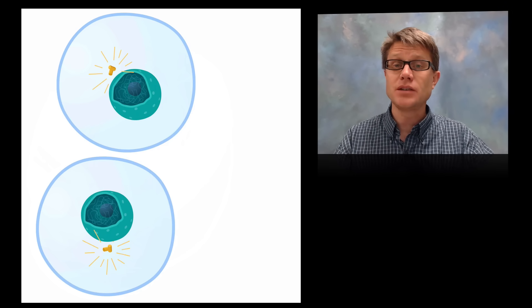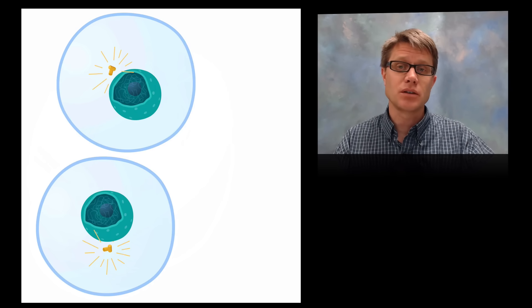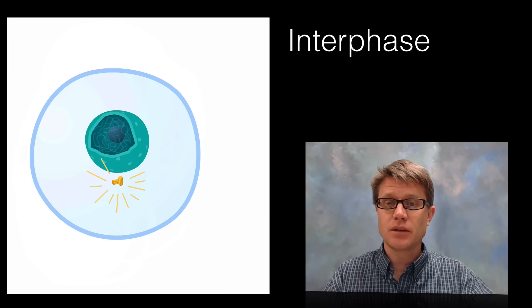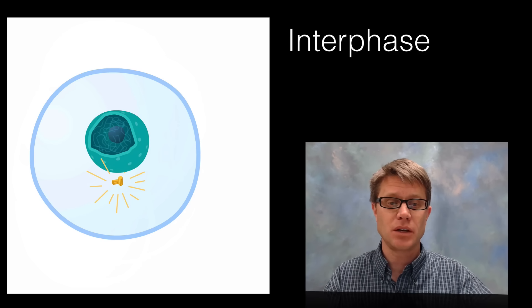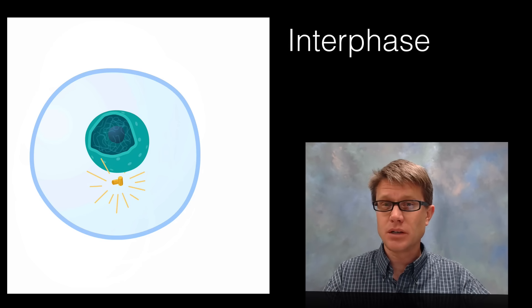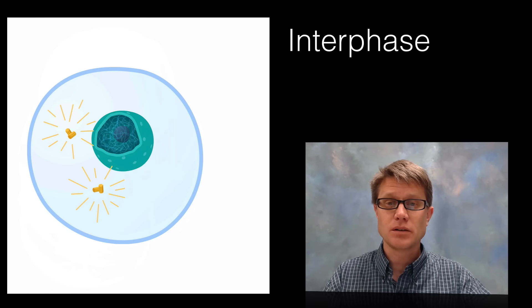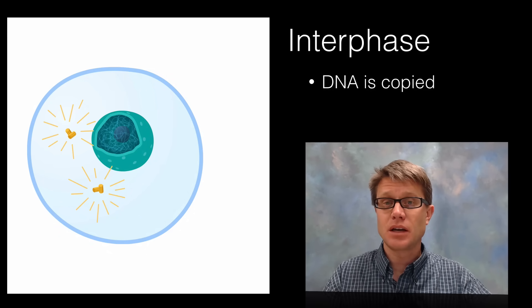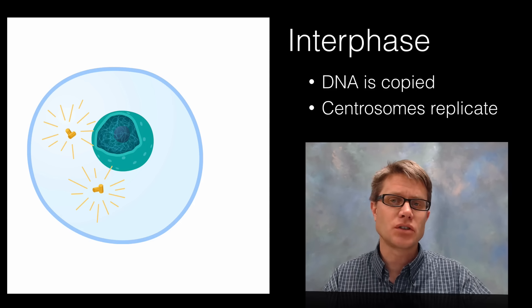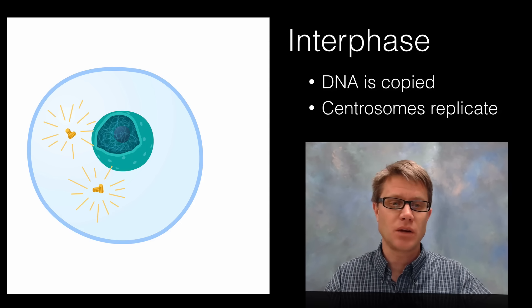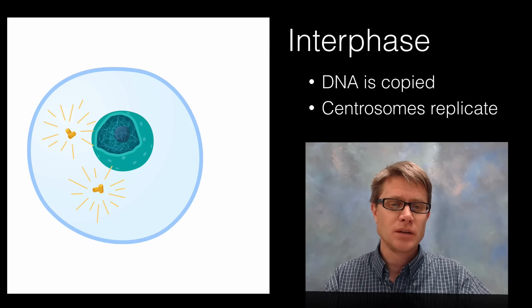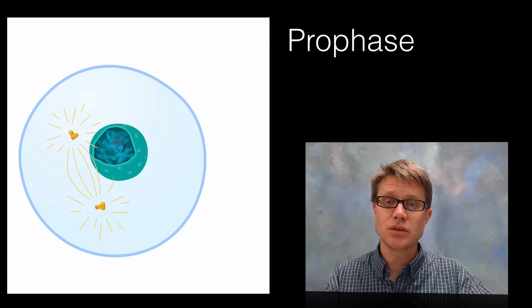Now let's go through all the phases and add names. We'll start with interphase, which is technically not part of mitosis. Early in interphase and then later: one big thing that happened is we copied the DNA — we've duplicated it. Another thing that occurred during interphase is that the centrosomes were replicated, so now we have two centrosomes where we had one before.